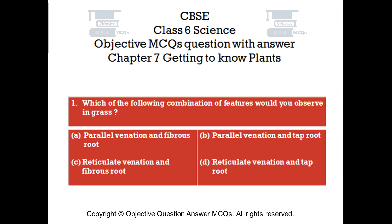Question number 1. Which of the following combination of features would you observe in grass? Option A: Parallel venation and fibrous root. Option B: Parallel venation and tap root. Option C: Reticulate venation and fibrous root. Option D: Reticulate venation and tap root.